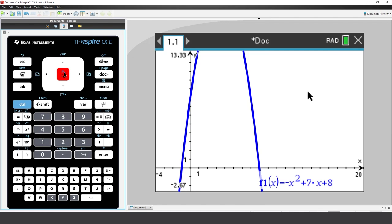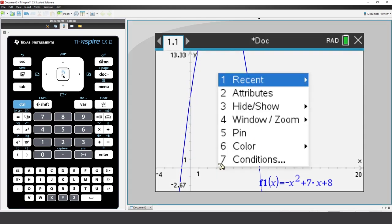I could continue checking these zoom options, however, there's a shortcut. Move the mouse over the X or Y axis. Press Control followed by Menu. Select Attributes.